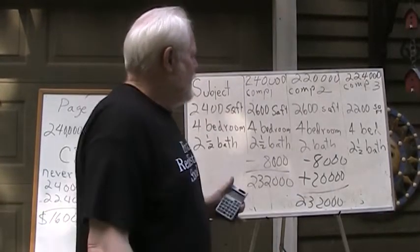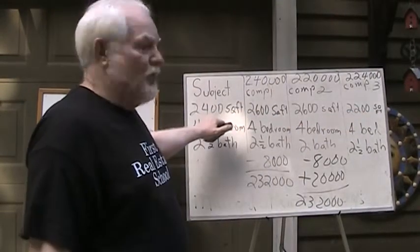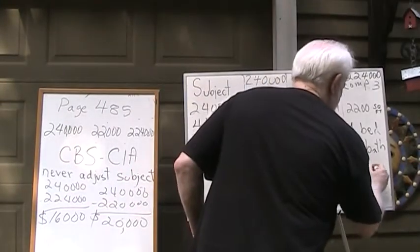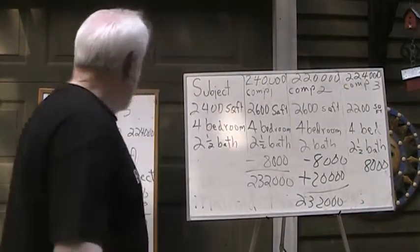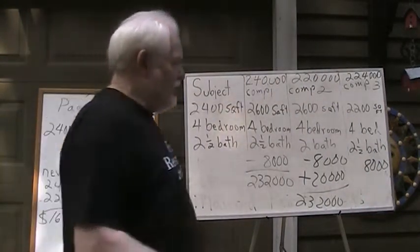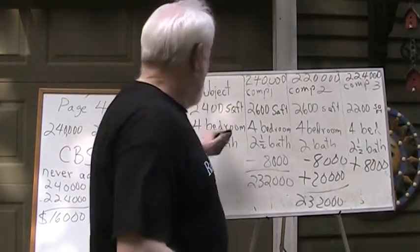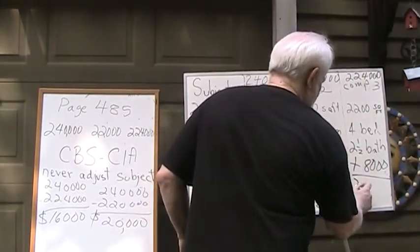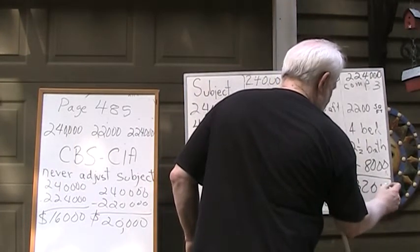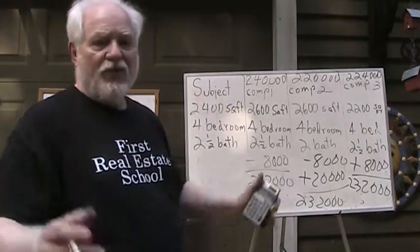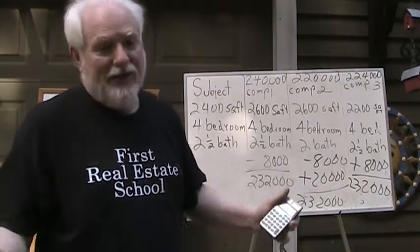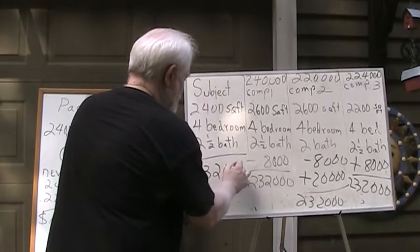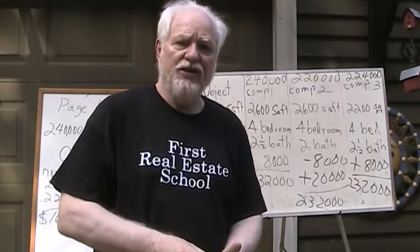Comparable number three is 200 square feet smaller — inferior. So we take that same $8,000, but this time, since the comparable is inferior, we add that $8,000. Our bedrooms are the same and our bathrooms are the same. So this property would have sold for $224,000 plus $8,000, which is $232,000. In this case, we come out with all three houses at $232,000. It doesn't always happen that way, but it did this time, so it would be safe to say our subject property is worth $232,000.